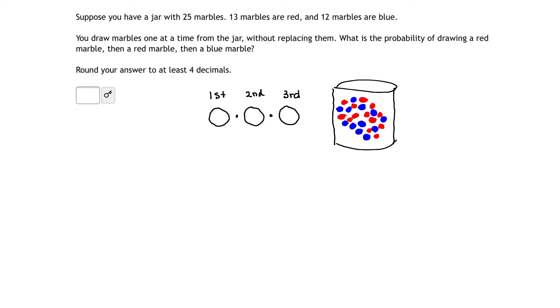We first take the marble that we pull out and we say, what is the probability of drawing a red marble to start? So that first marble, what would be the probability that it's red? Well, how would we get that probability? We would have to take the total number of marbles in our jar, which is 25.